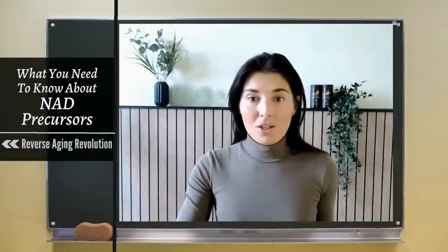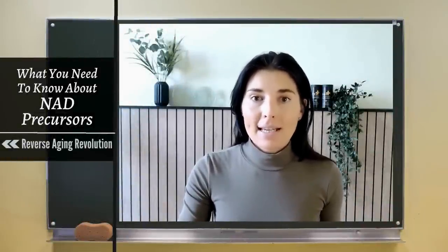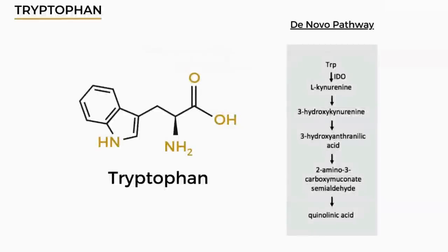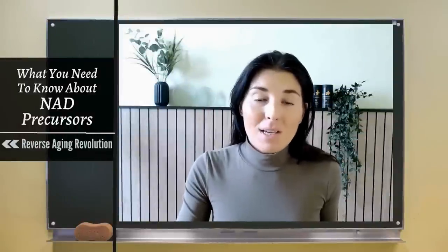Apart from tryptophan, which is an amino acid, the rest of the NAD precursors are actually vitamin B3 derivatives. Now, tryptophan is somewhat of an outlier because unlike the rest of the precursors, it's made into NAD by a pathway called the de novo pathway, which occurs mostly in the liver and the kidneys. But this pathway is known to make only a very small contribution to overall NAD production, so it's not really spoken about as much as the other pathways.